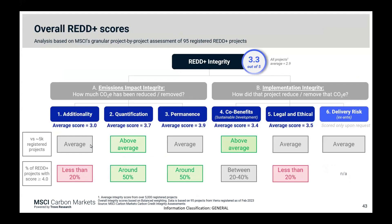Overall, looking at average integrity scores across 95 registered REDD+ projects with detailed individual assessments, average scores are usually in the mid-range compared to the whole carbon market. However, this average masks significant variation at the individual project level and criteria level. When looking at the percentage of REDD+ projects scoring over 4 out of 5, the picture is more nuanced: fewer than 20% of projects score higher than 4 on additionality or legal and ethical risks, while for quantification and permanence, nearly 50% do.